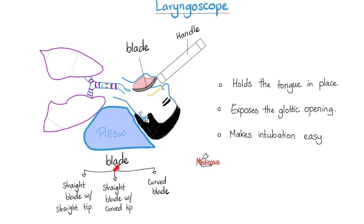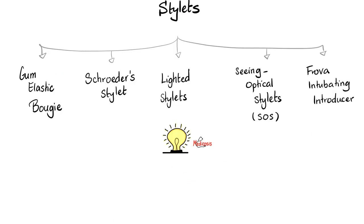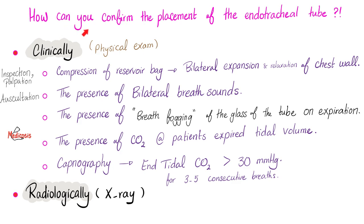The blade comes in many sizes, shapes and forms — some straight, some curved, some straight with a curved tip. You can add a stylet: the bougie, the shrouded stylet, the lighted stylet, seeing optical stylets, or the over-intubating introducer. To confirm the tube is in the trachea and not the esophagus: clinically — compress the reservoir bag and watch chest expansion; listen for bilateral breath sounds; check for fogging of the tube glass on expiration; check for carbon dioxide on expiration using capnography — end-tidal CO2 greater than 30 for three to five consecutive breaths confirms tracheal placement. Radiologically, just get an X-ray.